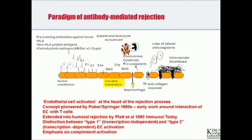This is the current way that most people think of antibody-mediated rejection. In the case of hyperacute rejection, you have pre-existing antibodies against the donor — they could be against HLA molecules, non-HLA protein antigens, or carbohydrate epitopes such as the AB blood group, or in xenotransplantation, the terminal gal-alpha-1-3-gal linkage. They bind to the endothelium, represented here as normal endothelium with tight junctions, expressing molecules that inhibit coagulation and keep blood flowing.